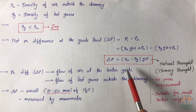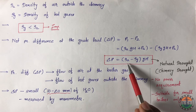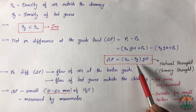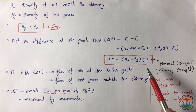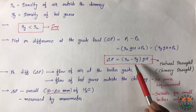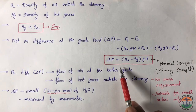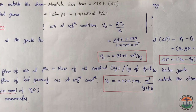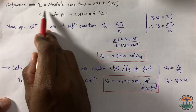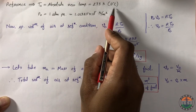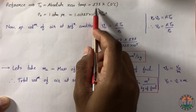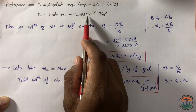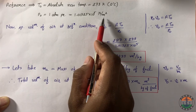We have the natural draft equation in terms of density of air and density of flue gases. We are going to convert it in terms of temperature of cold air and temperature of flue gases, so that with the help of temperatures we can easily calculate delta P. For reference, T0 is the absolute zero temperature, 0°C or 273 K, and P0 equals 1 atmospheric pressure, 1.01325 × 10^5 N/m².